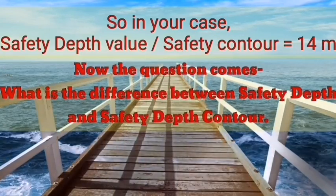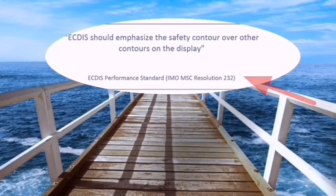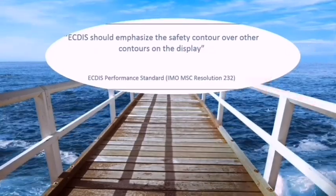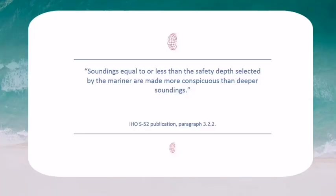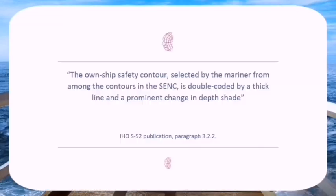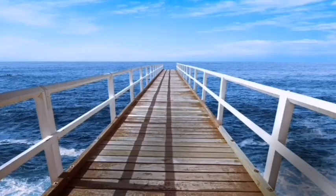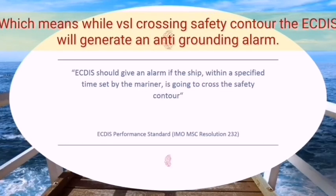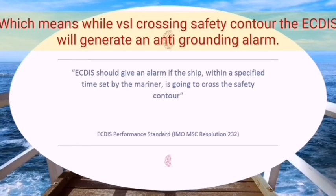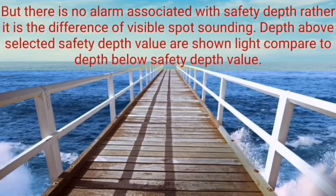Now the question comes: what is the difference between safety depth and safety contour? As regarding safety depth, IHO S-52 publication paragraph 3.2.2 says soundings equal to or less than the safety depth selected by the mariner are made more conspicuous than deeper soundings. Here comes the difference: though both safety depth and safety contour have the exact same value, crossing the safety contour in ECDIS will generate an anti-grounding alarm, whereas there is no alarm associated with safety depth.